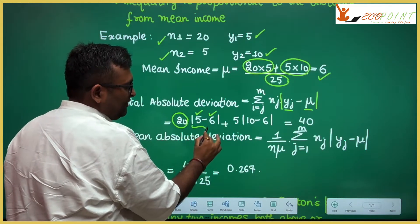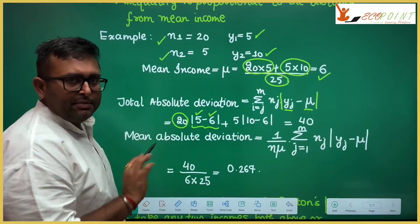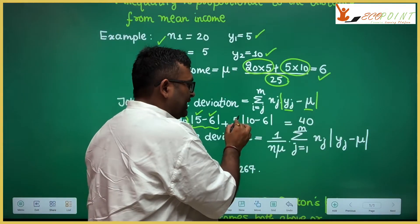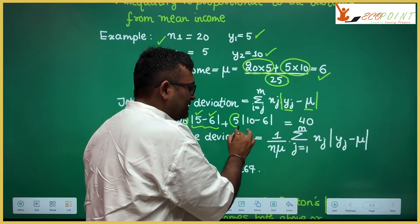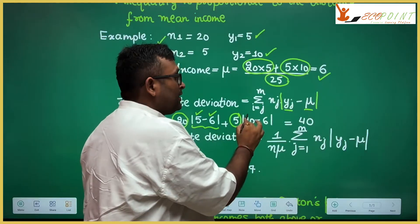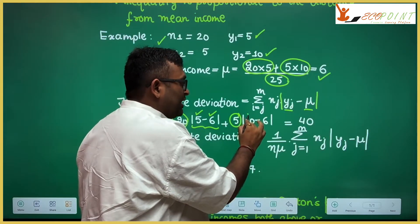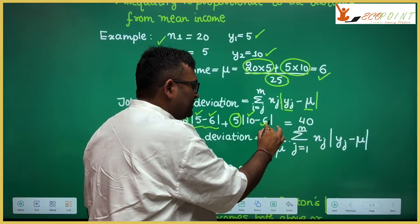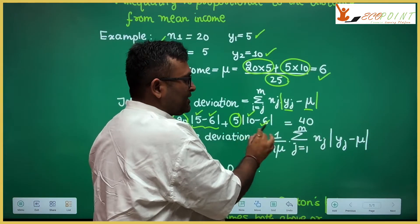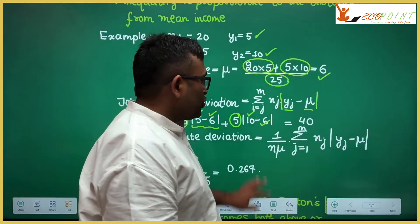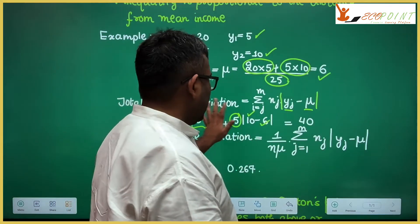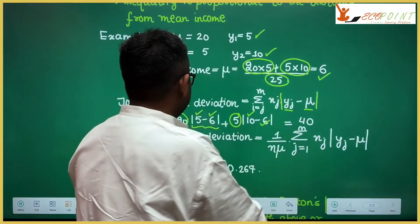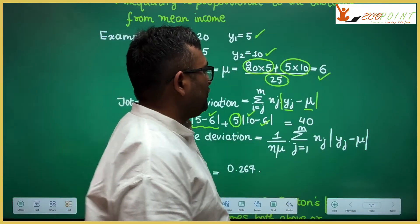What is the total absolute deviation? You take the number of people in class 1 multiplied by the absolute deviation, which is the absolute value of income of class 1 minus the mean. Class 1 has 20 people, income of 5, mean of 6, so absolute deviation is 1. Class 2 has 5 people, income of 10, mean of 6, so absolute deviation is 4. Total absolute deviation is 20×1 + 5×4 = 40.